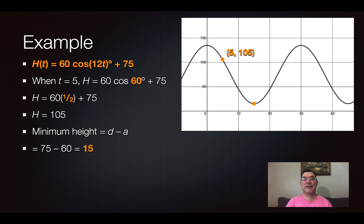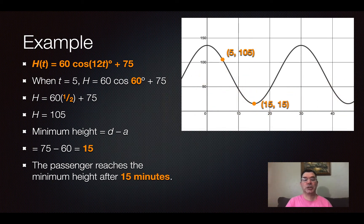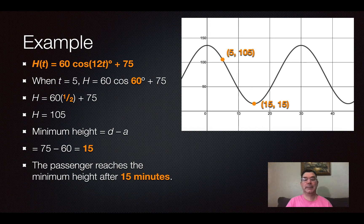D is that 75 that's being added onto the end and 60 is that number that is being multiplied out front. So, I subtract those numbers and I get 15. So the passenger reaches the minimum height after 15 minutes, okay?